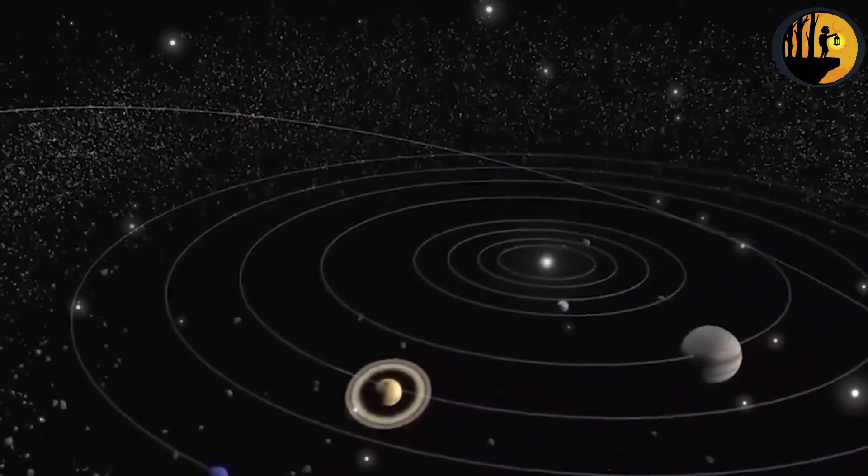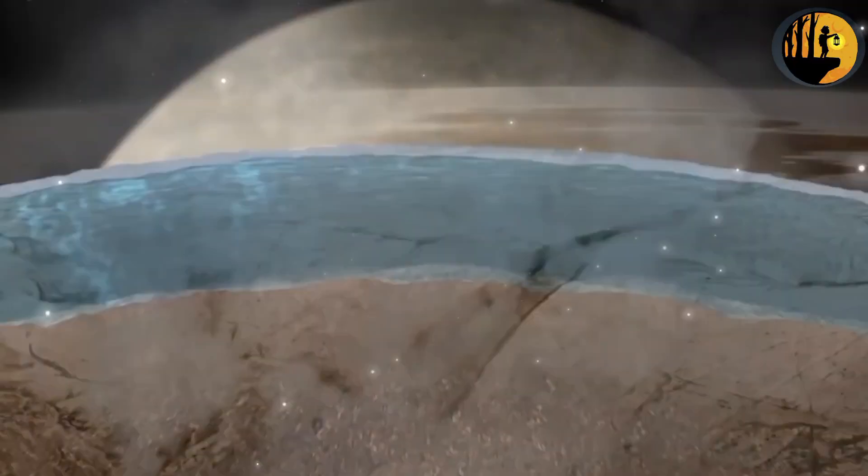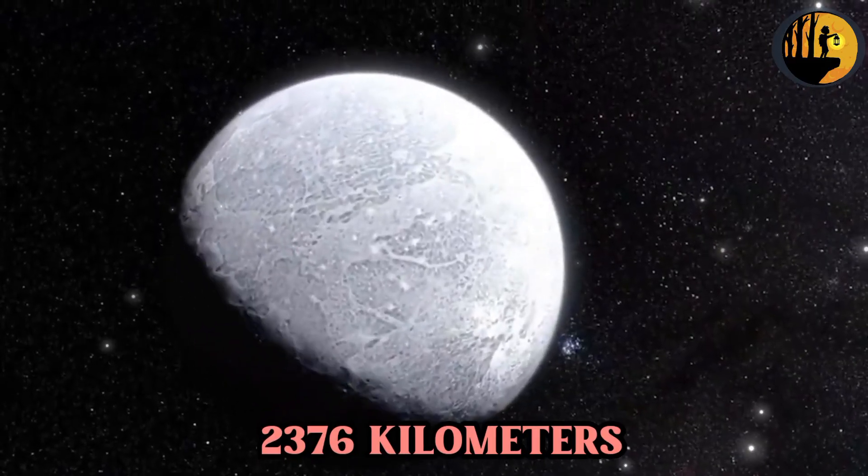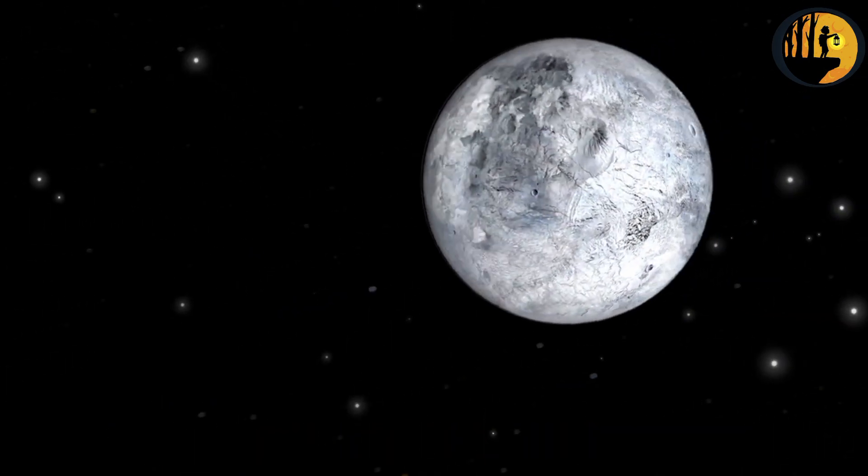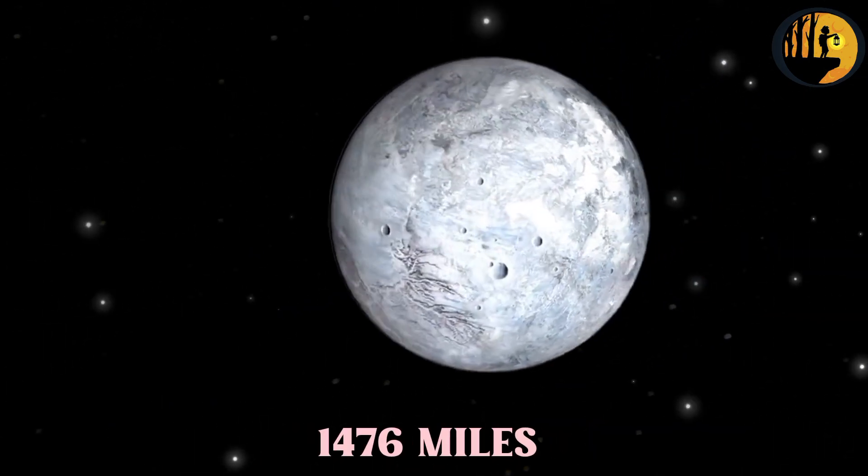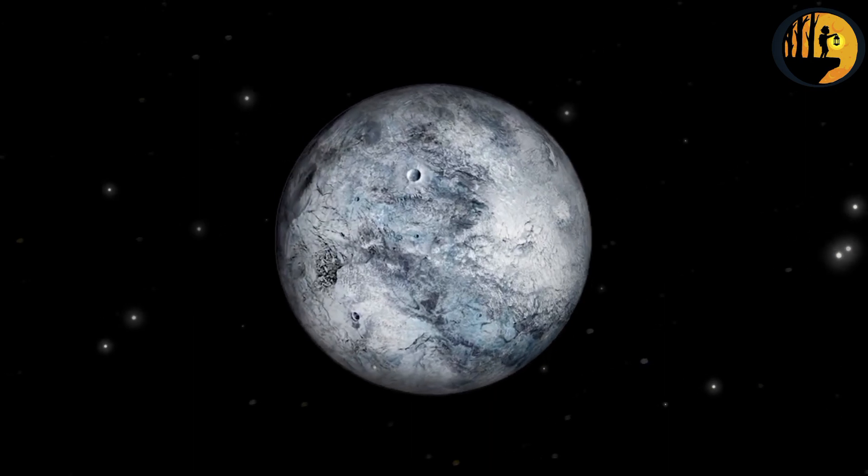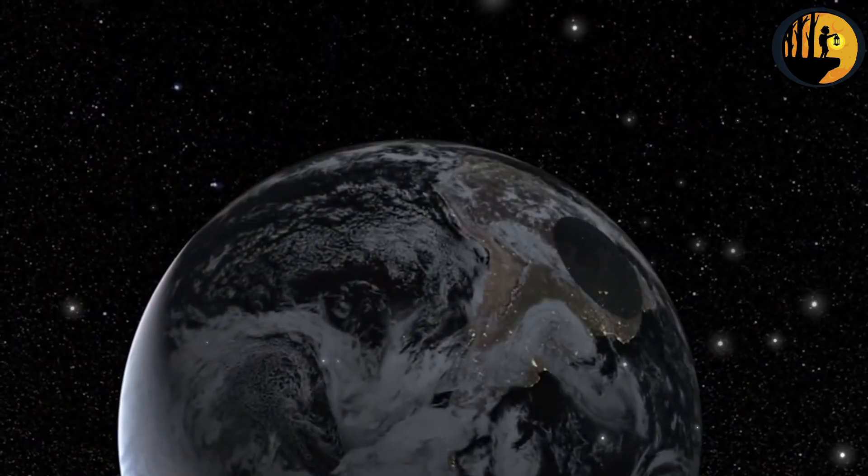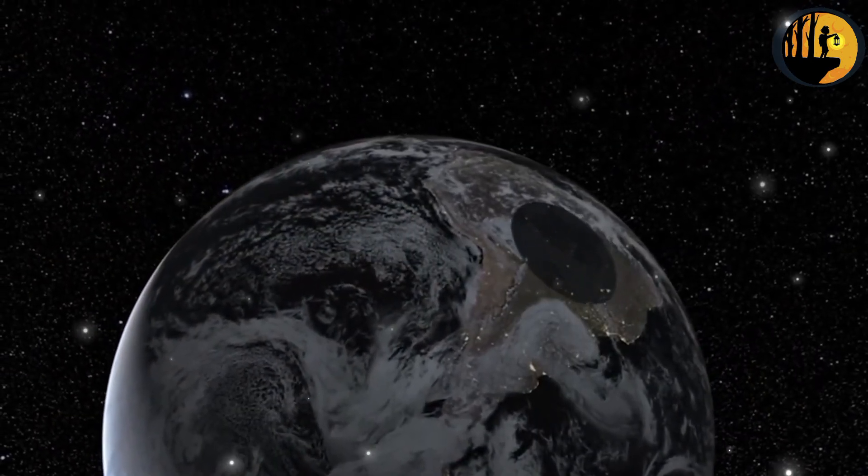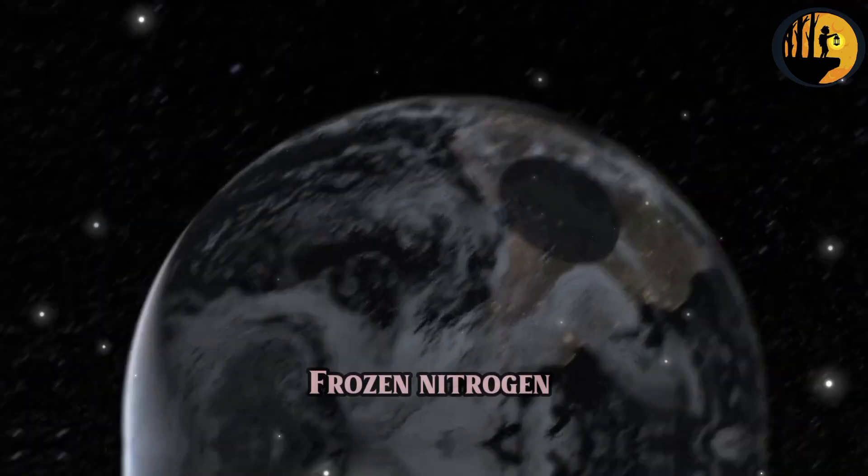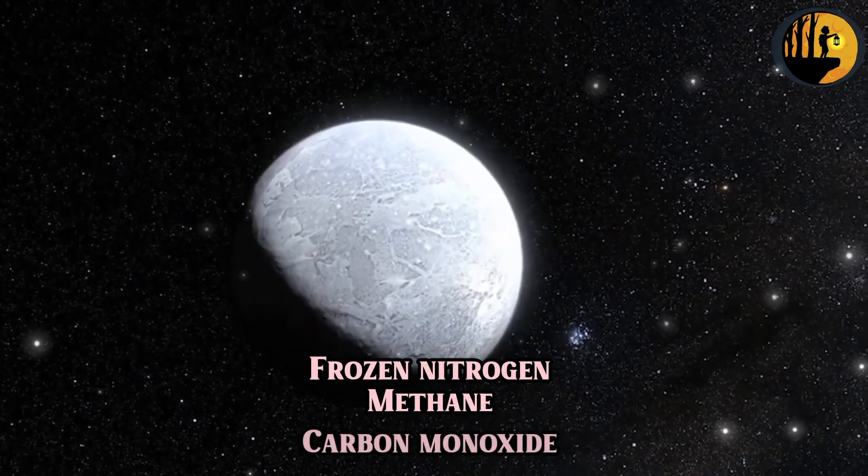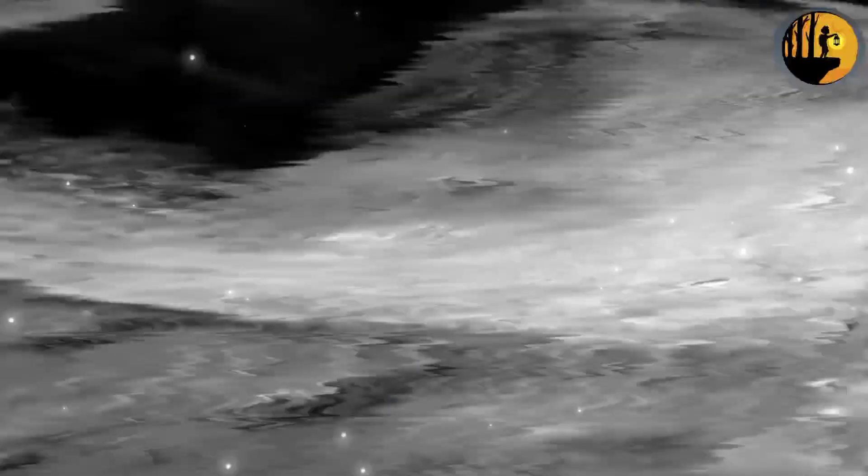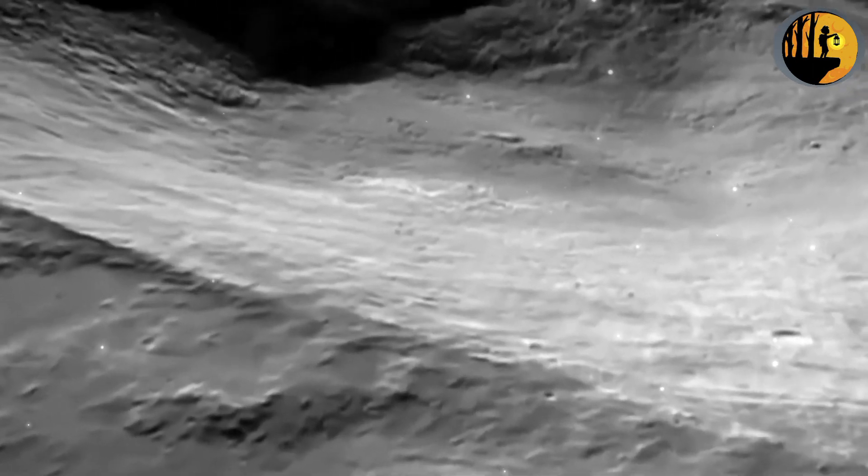In terms of size, Pluto is relatively small compared to major planets like Earth or Jupiter. It has a diameter of approximately 2,376 kilometers (1,476 miles), making it smaller than our moon. Its composition consists of a mix of rocky material and various icy substances, including frozen nitrogen, methane, and carbon monoxide. These ices give Pluto its distinct reddish-brown color.